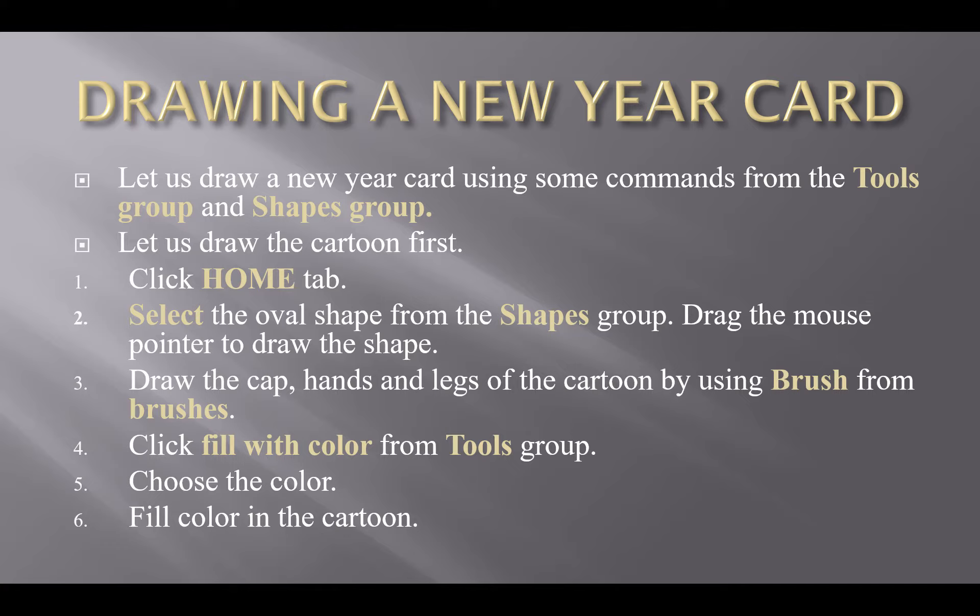Then drag the mouse pointer to draw the picture. You have to click the mouse button on the left of your blank screen and drag the mouse — you will draw the oval shape. You will draw two oval shapes: one for the face and one for the body. Step three: draw the cap, hands, and legs of the cartoon by using the brush from brushes.